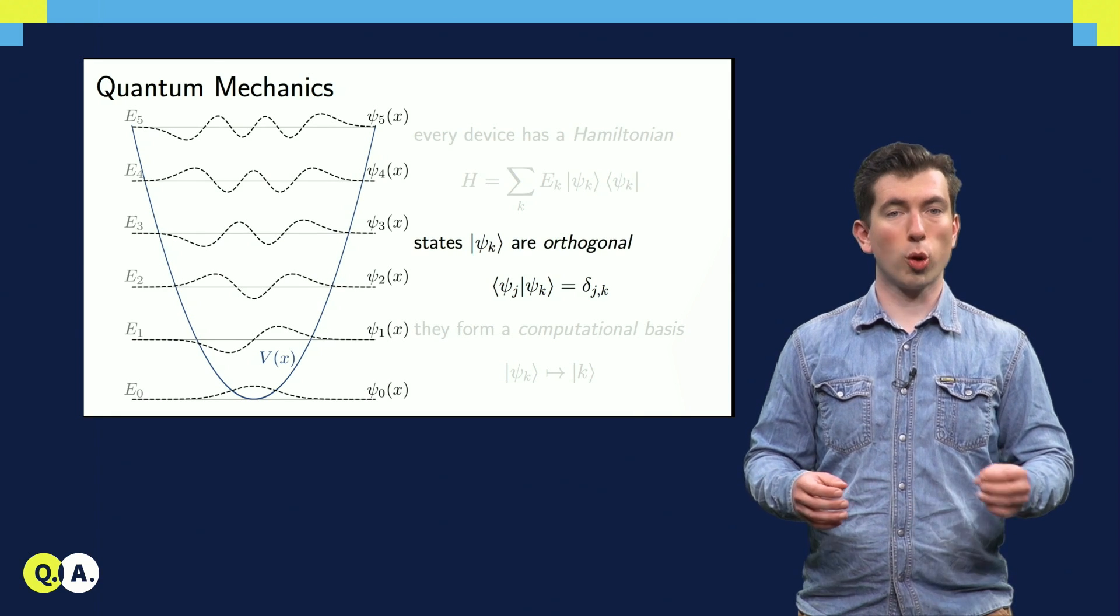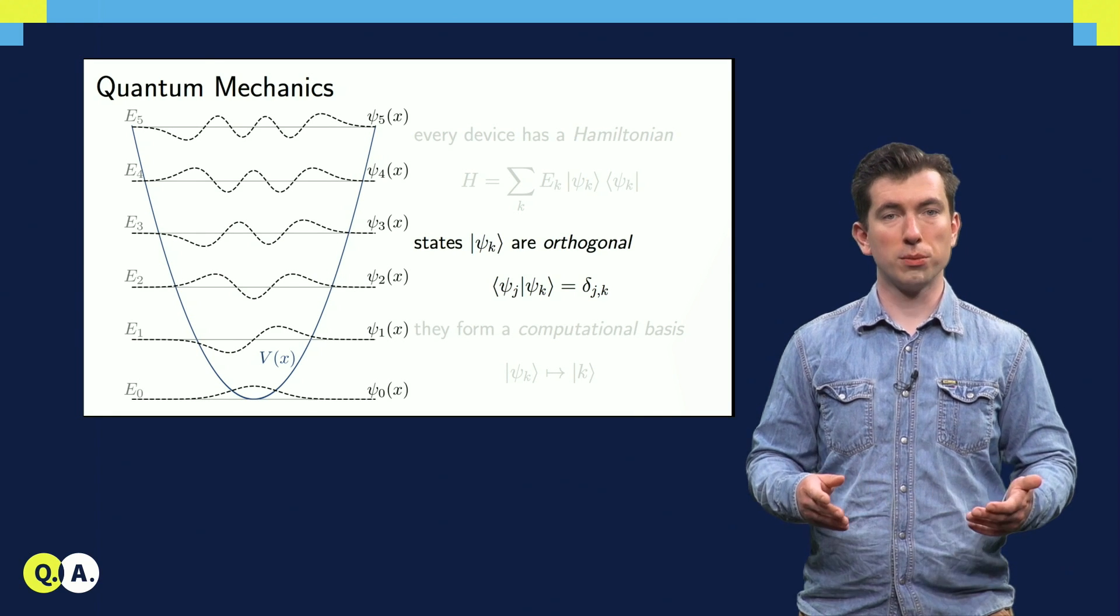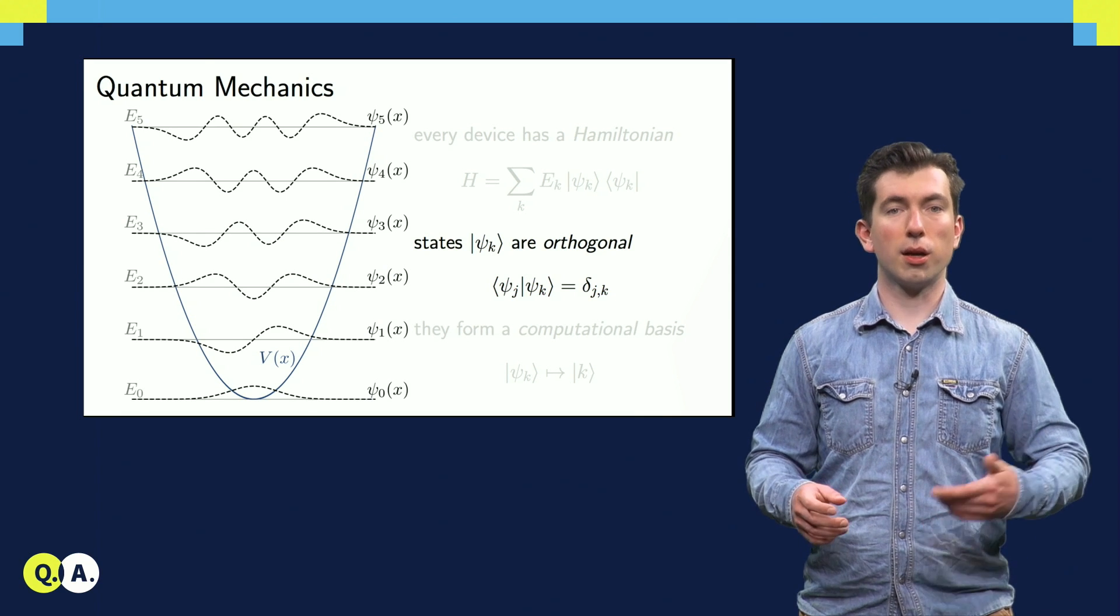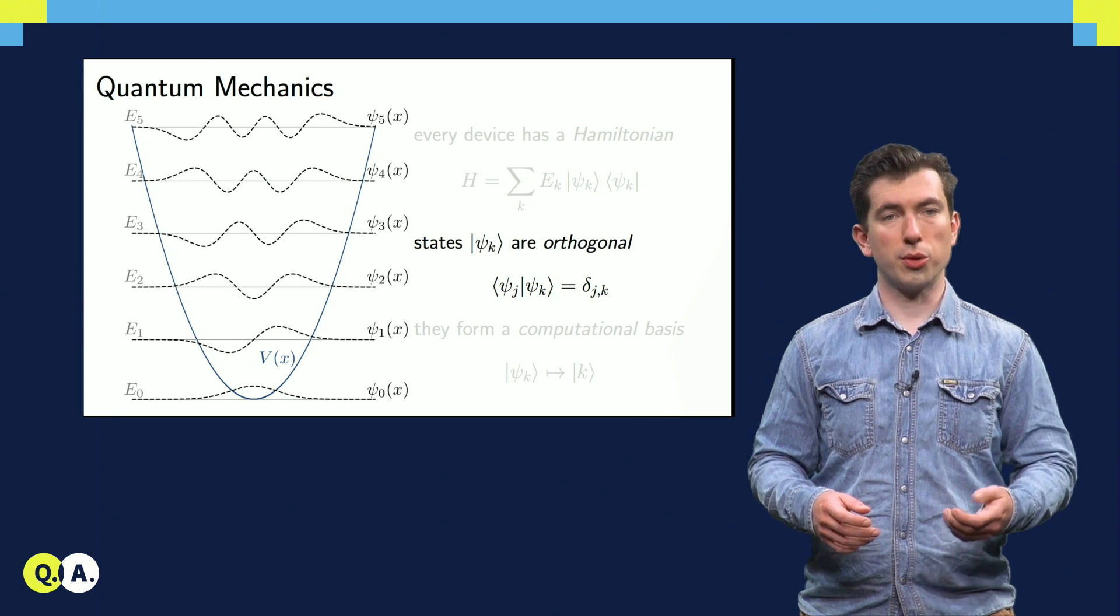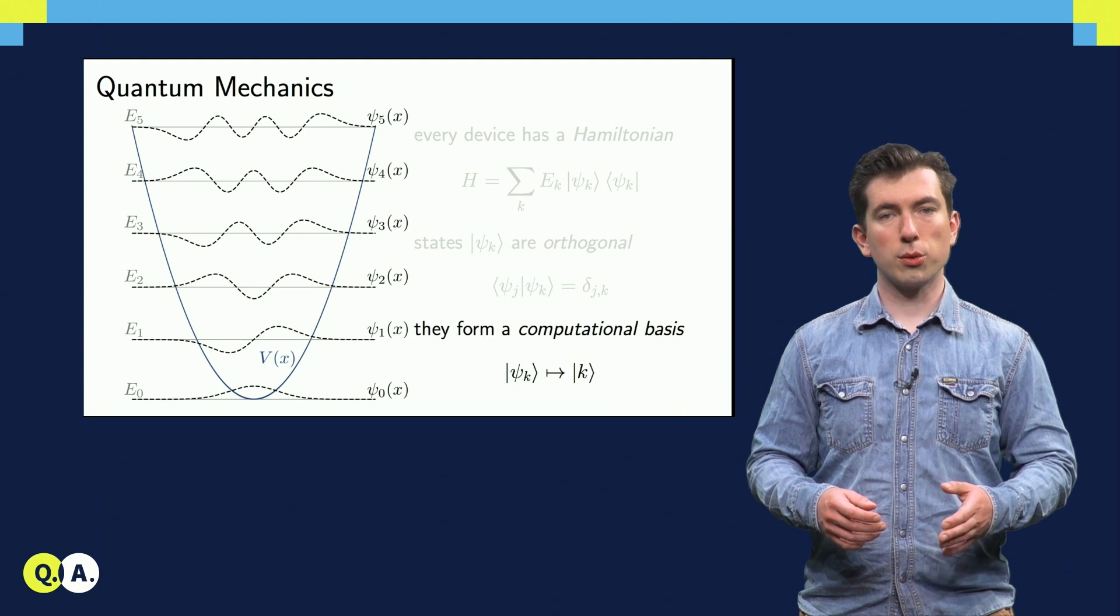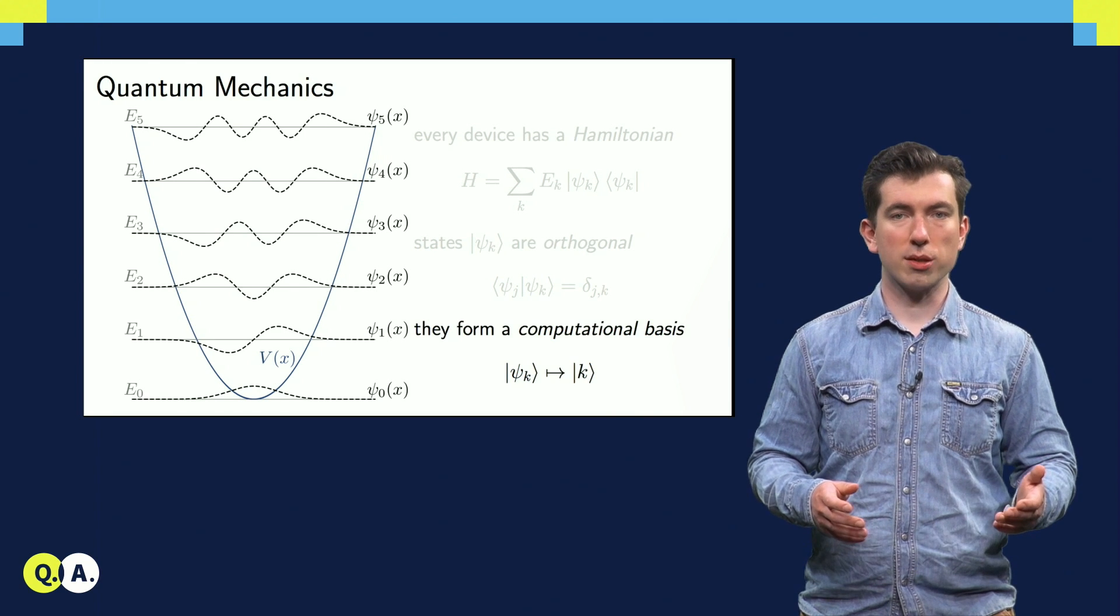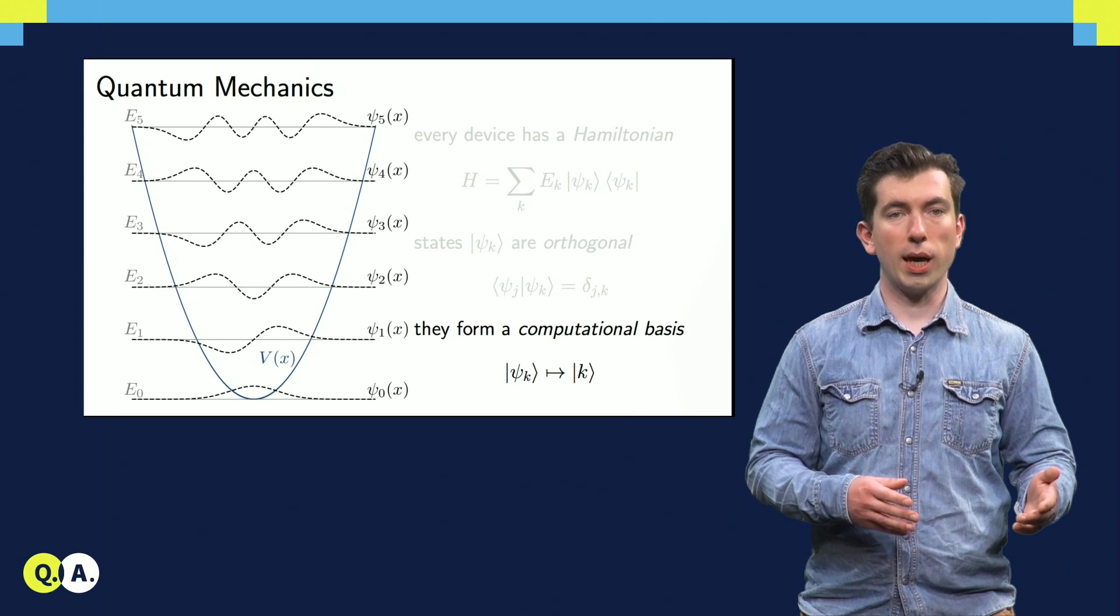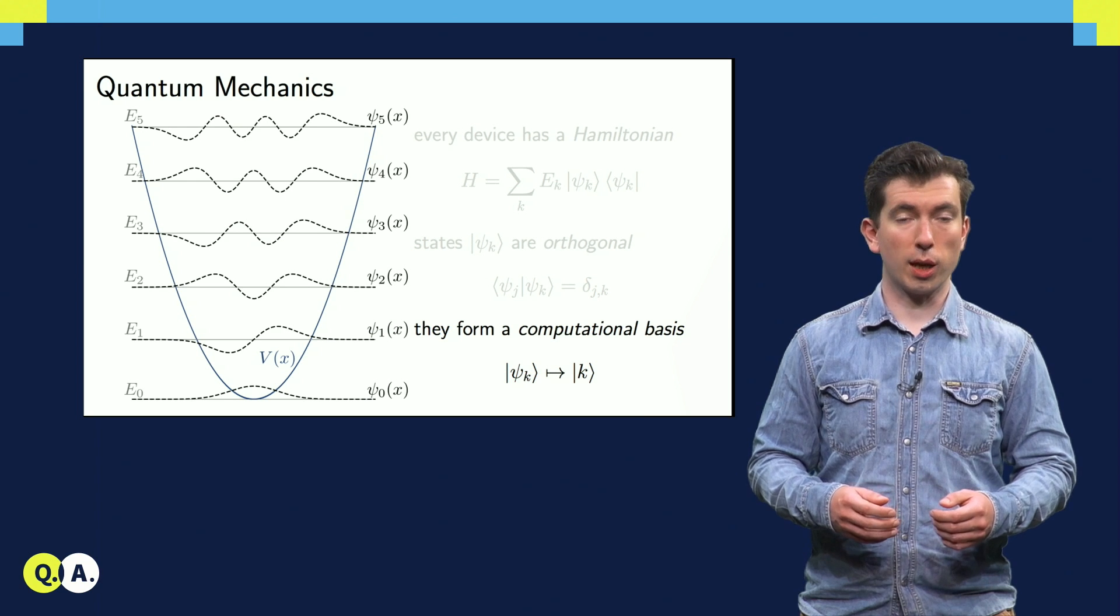These states are orthogonal and normalized, so we say that they are orthonormal, so the inner product of psi_j with any psi_k other than itself psi_j is 0. This allows us to use these states as a computational basis, replacing any detailed knowledge of the wave function psi_k with a simple label k that indicates which state we're talking about.